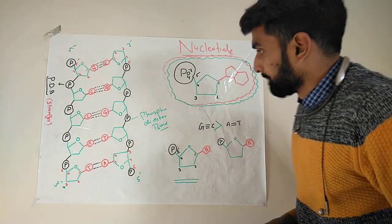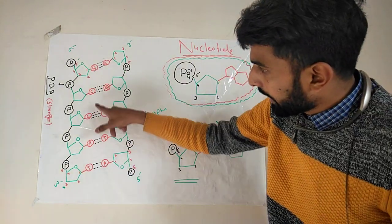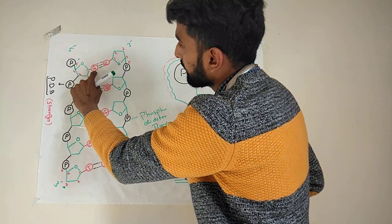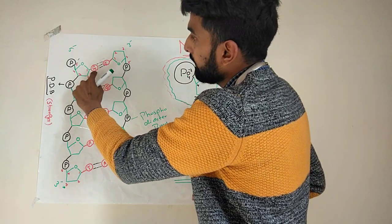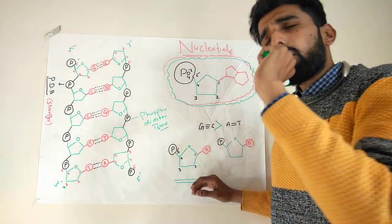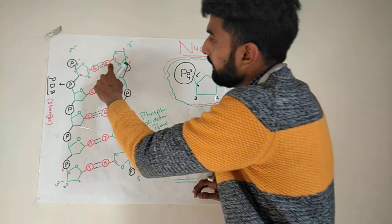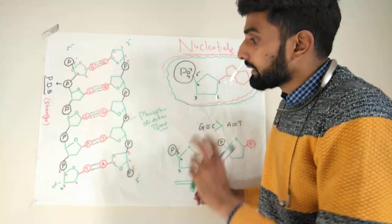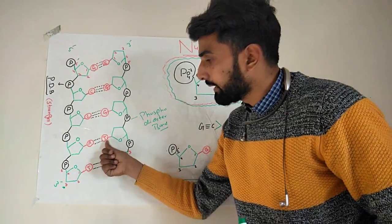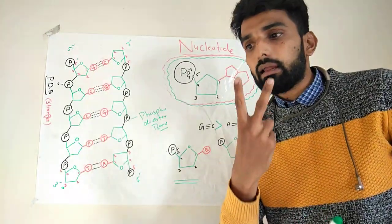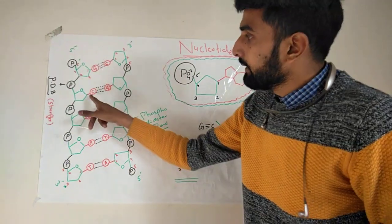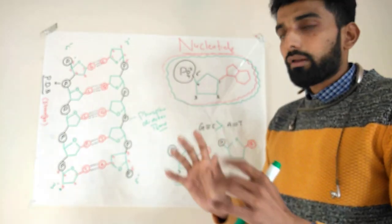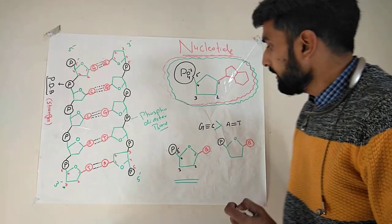The bond between the nitrogenous bases — here the nitrogenous base is guanine. Guanine will only make a bond with cytosine, and adenine will only make a bond with thymine. The bond between adenine and thymine is always a double hydrogen bond, while the bond between cytosine and guanine is always a triple hydrogen bond. These hydrogen bonds are weaker compared to the phosphodiester bond.